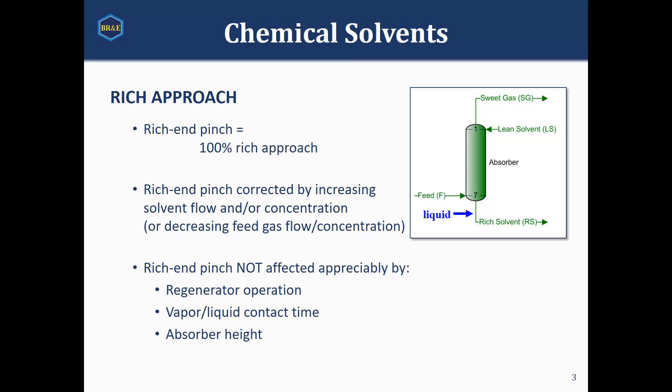It's also important to acknowledge that other changes in the process aren't going to help us if our issue was a rich-end pinch, and so improving the way our regenerator runs, or increasing the size of our absorber, those aren't going to have an effect on our operation. It just comes down to a capacity issue where we need to flow more amine in the system. And so that's the idea of a rich approach.